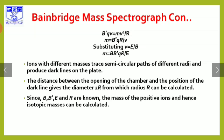Since V equals E divided by B, substituting gives: B'q(E/B) equals mv squared divided by r. Ions with different masses trace semi-circular paths of different radii and produce distinct lines on the photographic plate.